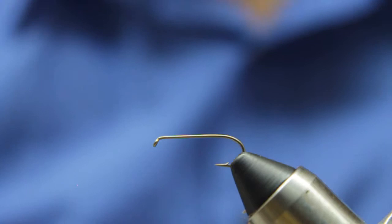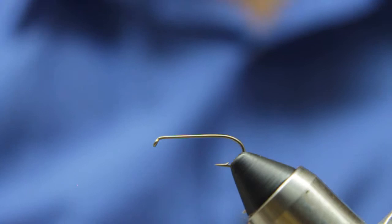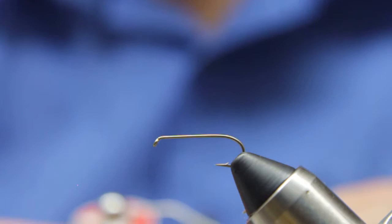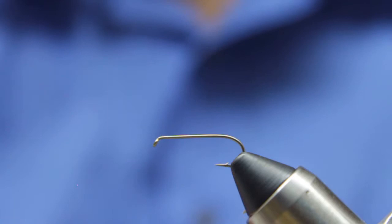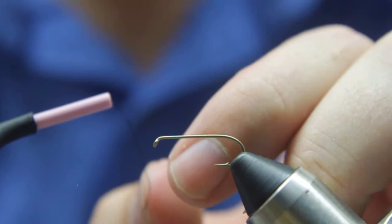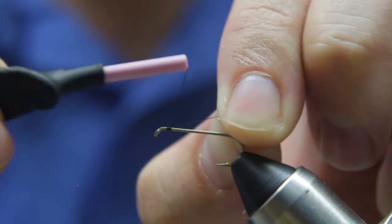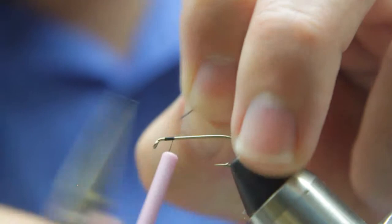To start this fly, we need to start a thread base. What I'm going to use is some UTC black 70 thread. I'm going to start it at the index point and work my way back. I'm just going to keep wrapping it back.